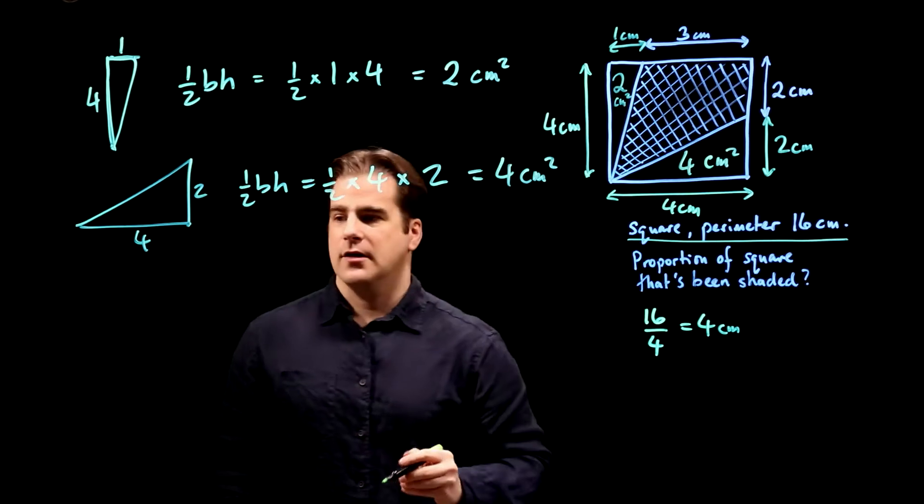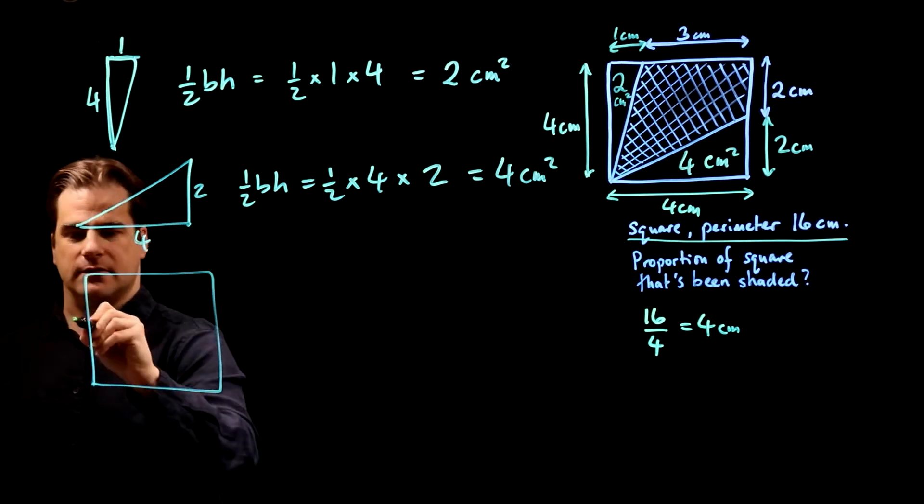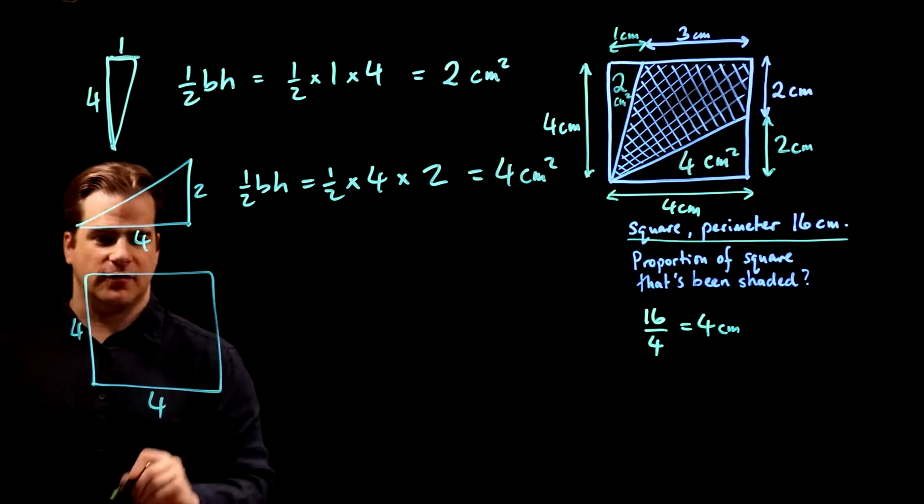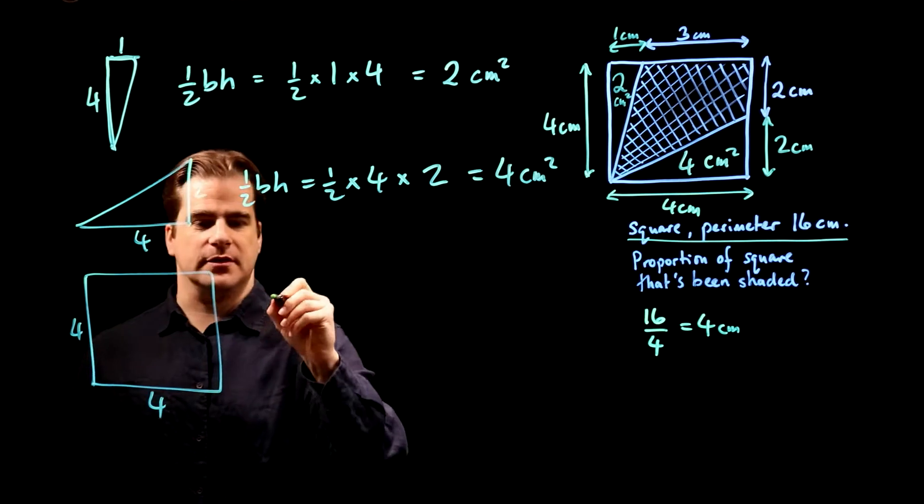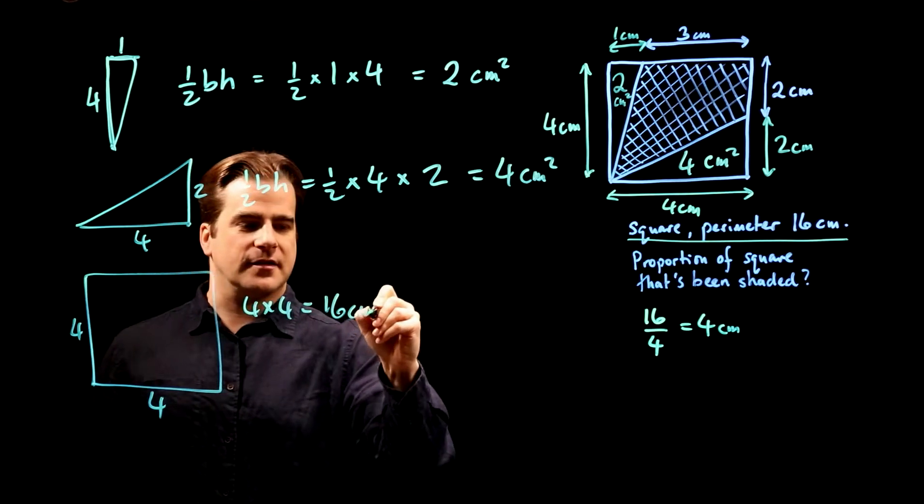Good. Now, the whole thing is four times four, area of a square, pretty simple. Four times four is 16 centimetres squared.